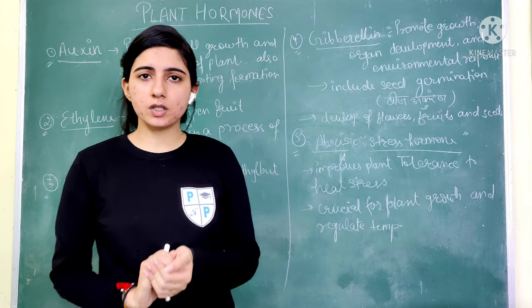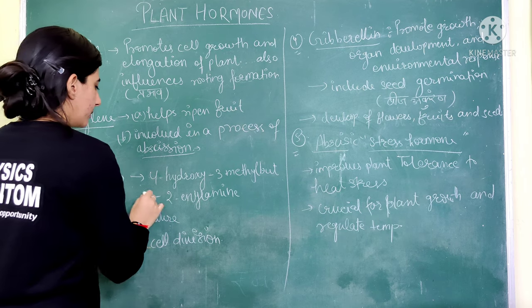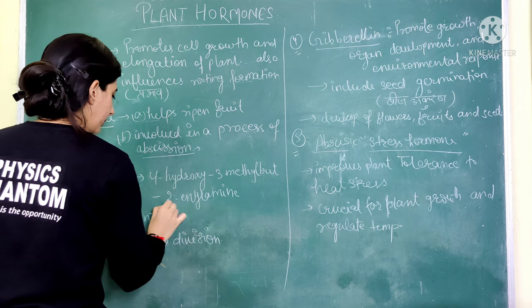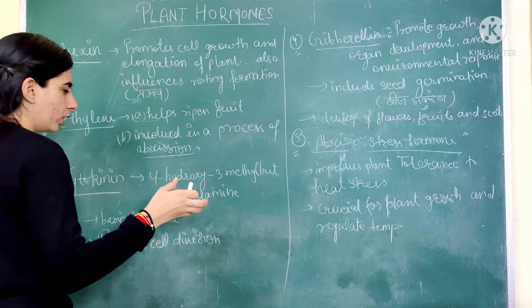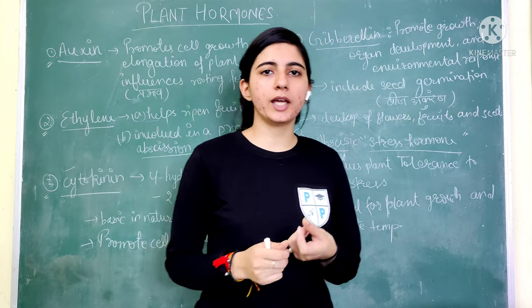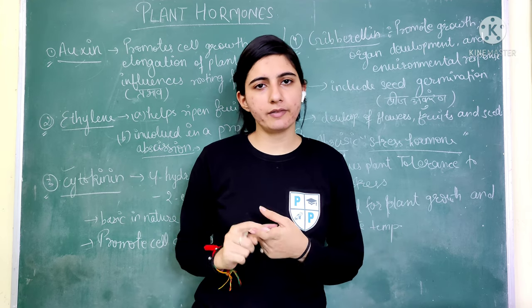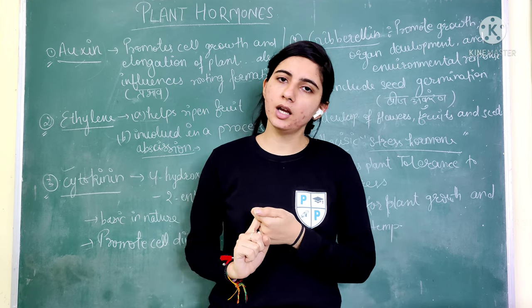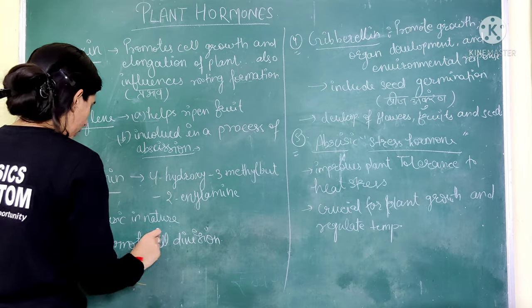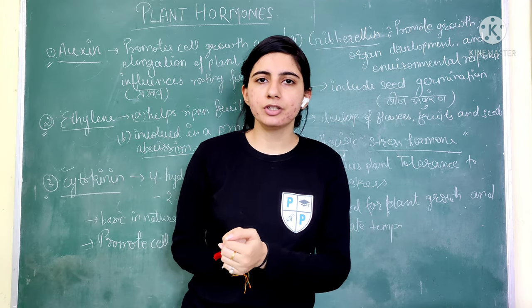The third important hormone is Cytokinin. The chemical name of cytokinin is 4-hydroxy-3-methyl-2-ethylamine, but that is a very strange name and you don't need to learn it. However, it may be important for you in MCQ exams, so remember it from the name cytokinin. The first function of cytokinin is that it promotes cell division.